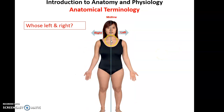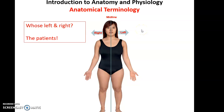We also have the left and right sides. Imagine a midline running through the body cutting it in half, giving approximately equal right and left sides. When we refer to right and left, we are talking about the patient's right and left — the person you are observing. So this is the right hand, this is the left hand; right ear, left ear. Remember, it's the patient's right and left.